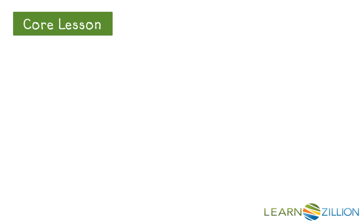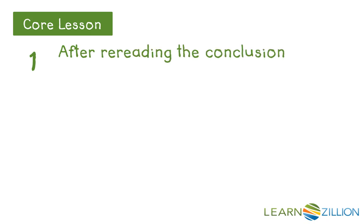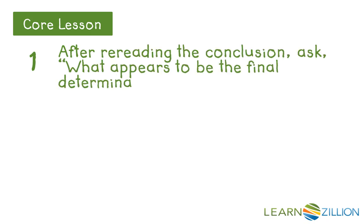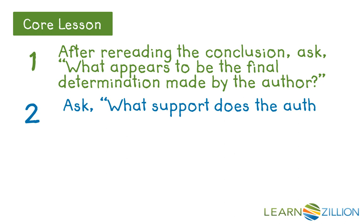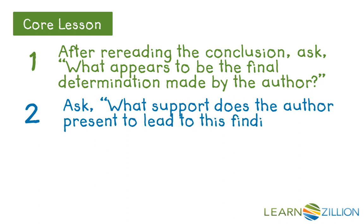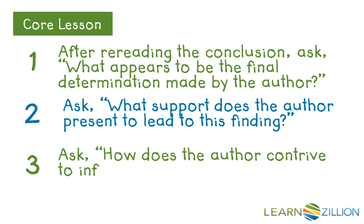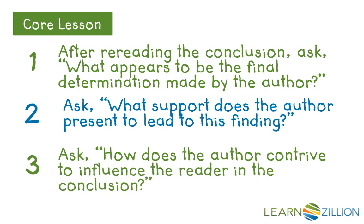Let's look at the steps we are going to use in this lesson. First, after rereading the conclusion, we will ask what appears to be the final determination made by the author. Next, we will ask what support does the author present to lead to this finding. And finally, we will ask how does the author contrive to influence the reader in the conclusion.